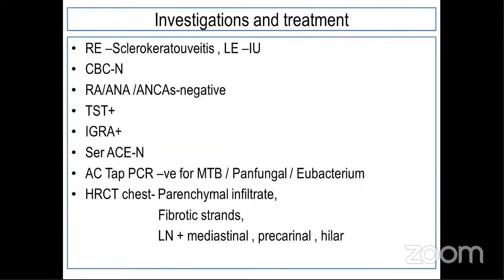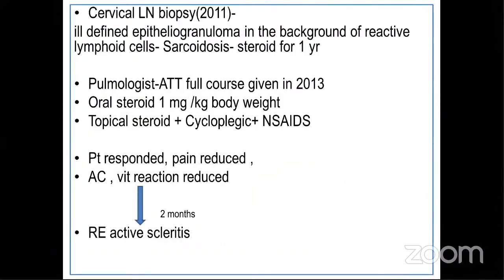We made a provisional diagnosis of sclero-kerato-uveitis in the right eye and intermediate uveitis in the left eye. On investigation, complete blood count was normal. All basic collagen vascular workups were negative. The tuberculin skin test as well as the IGRA was positive for screening TB. Serum ACE was normal. We ruled out infection by doing an AC tap with PCR negative for NTM, pan-fungal, and bacterial genome. HRCT chest showed parenchymal lymphoma with fibrotic strands and lymphoma in the mediastinum, precarinal, and hilar regions. Surgical lymph node biopsy showed evidence of granuloma in the background of lymphoid cells. The diagnosis of sarcoidosis was made.